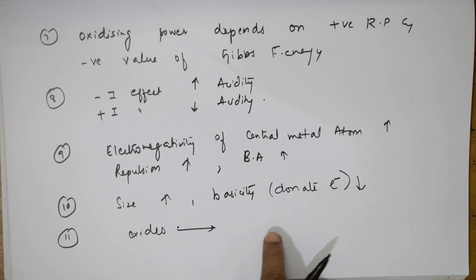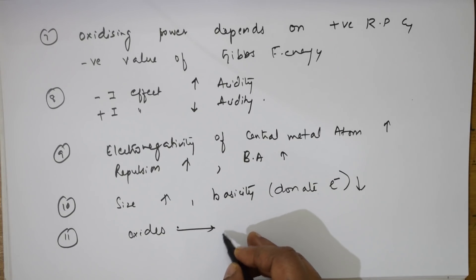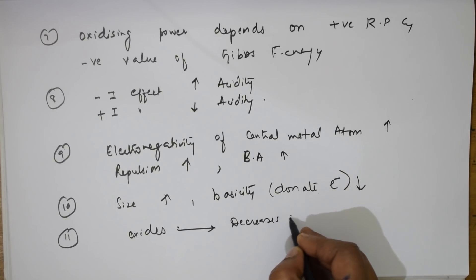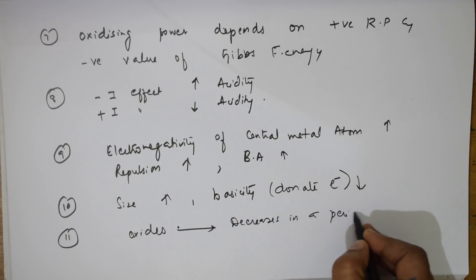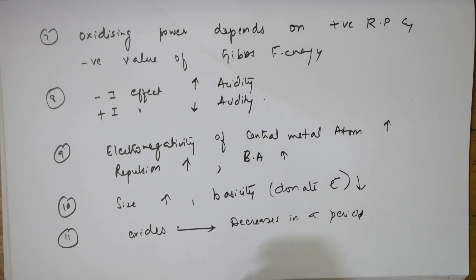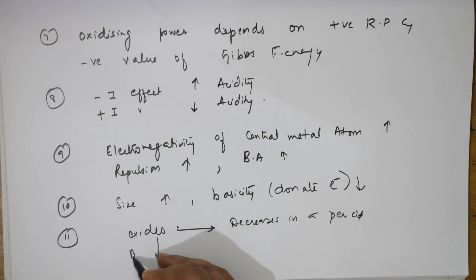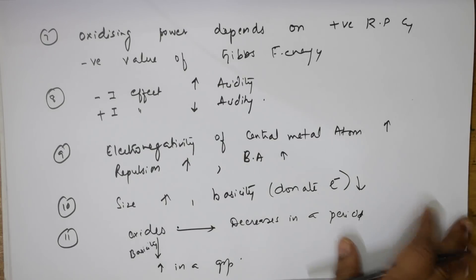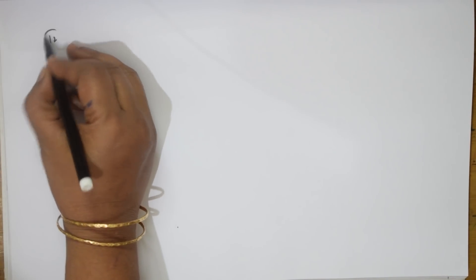For oxides: acidity of oxides decreases in a period, and basicity of oxides increases in a group. Remember this concept — it applies to many questions.